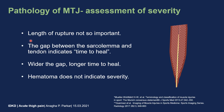The length of rupture is not so important, even if it's 20 centimeters. But the gap between the sarcolemma and the tendon is very indicative of the time to heal — that's the most important thing to look for. The wider the gap, the longer the time to heal. Hematoma does not actually indicate severity, but you can report it. The most important thing is the gap between the tendon and the muscle.